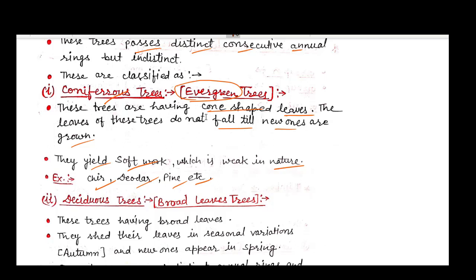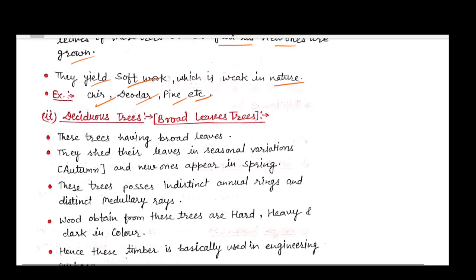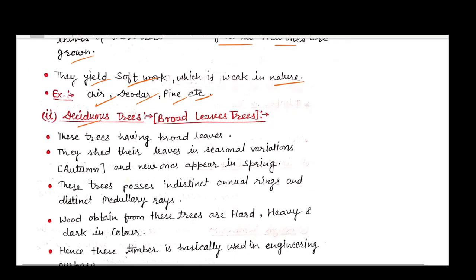The second type of tree is deciduous trees, which have broad leaves. These trees shed their leaves in seasonal variations like in autumn, and new ones appear in spring. These trees possess distinct annular rings and distinct medullary rays.